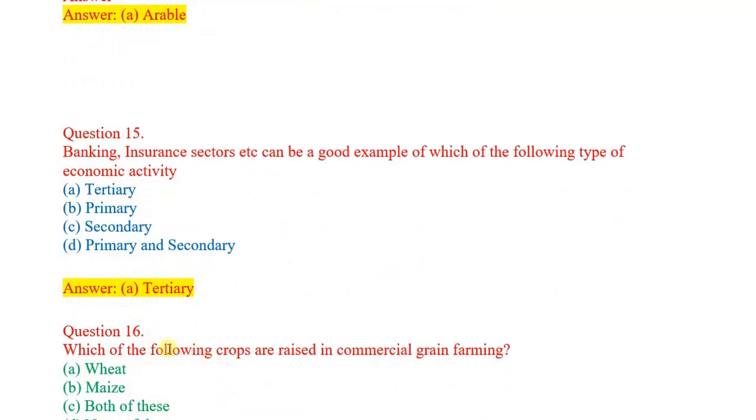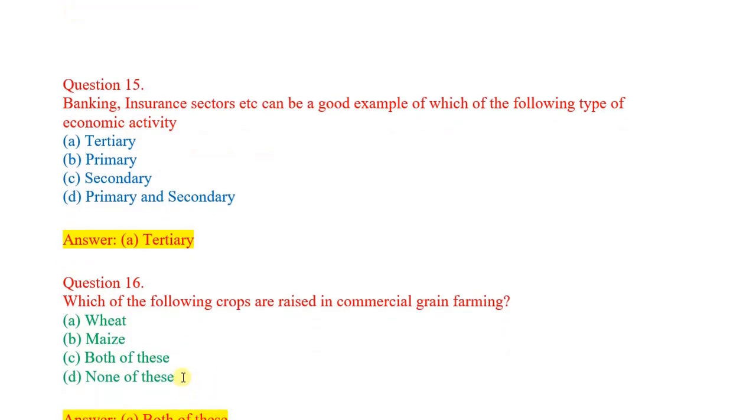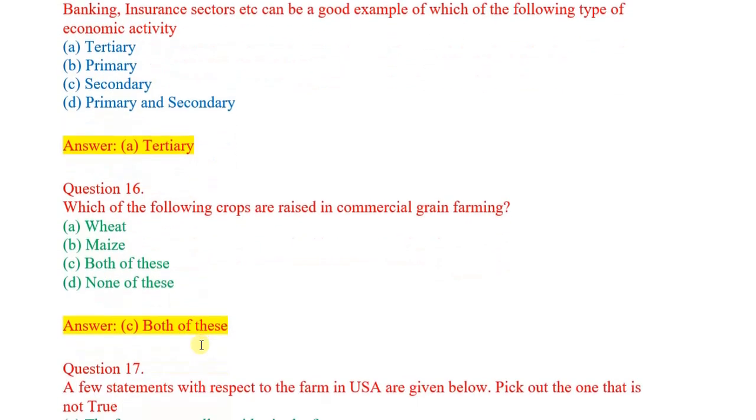Question number 16: Which of the following crops are raised in commercial grain farming? Options: wheat, maize, both of these, none of these. Correct answer: both of these. Wheat and maize are correct answers.